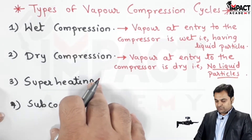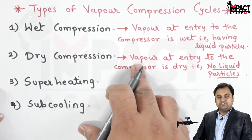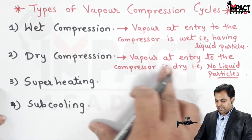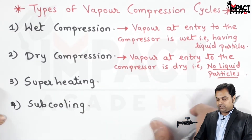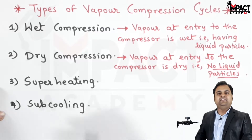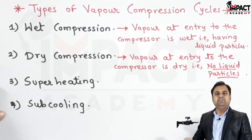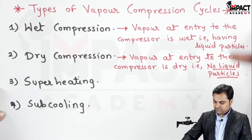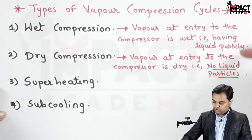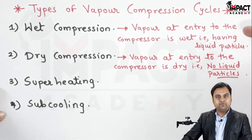In dry compression, the refrigerant vapor at entry to the compressor is dry — that is, it does not have any liquid particles like it was there in case of wet compression.